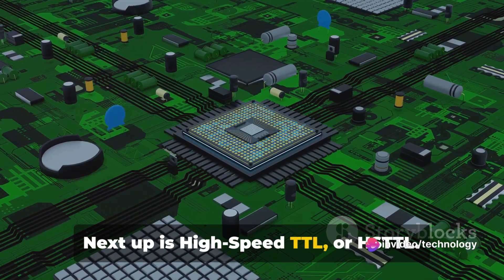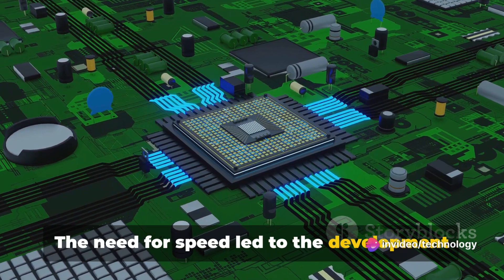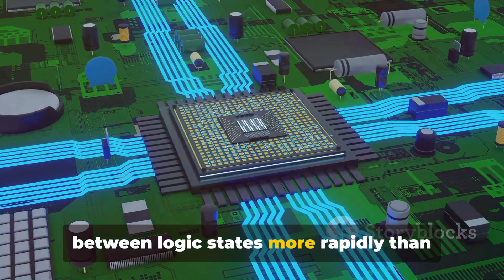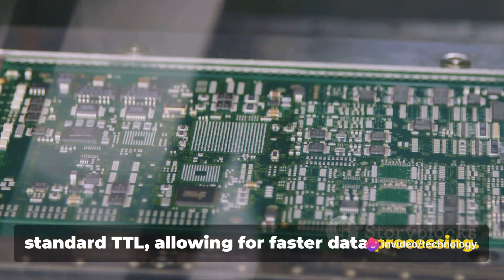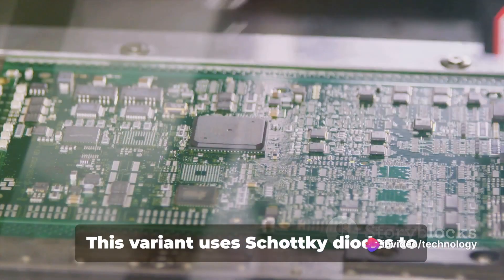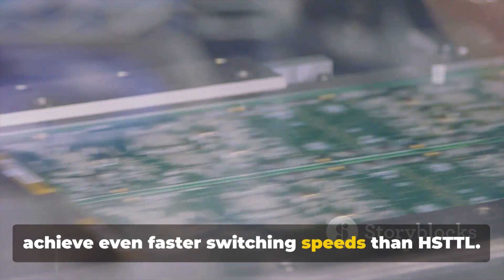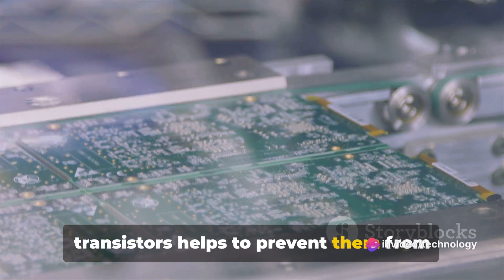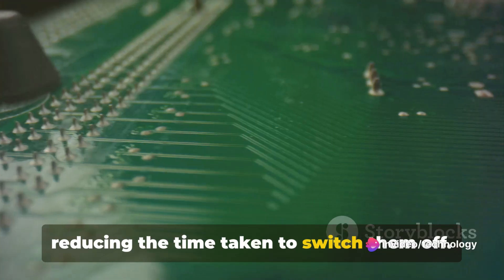Next up is high-speed TTL or HSTTL. The need for speed led to the development of this variant. HSTTL circuits were designed to switch between logic states more rapidly than standard TTL, allowing for faster data processing. Then we have the Schottky TTL, also known as STTL. This variant uses Schottky diodes to achieve even faster switching speeds than HSTTL. The use of these diodes in the transistors helps to prevent them from entering the saturation state, thereby reducing the time taken to switch them off.